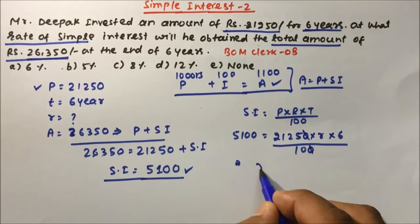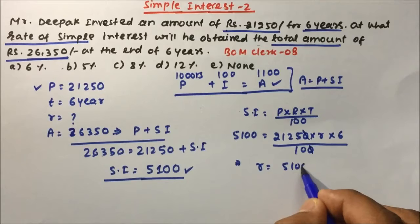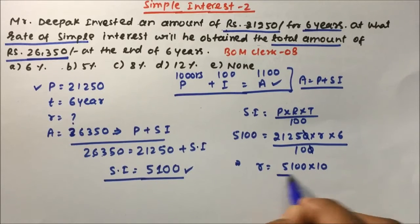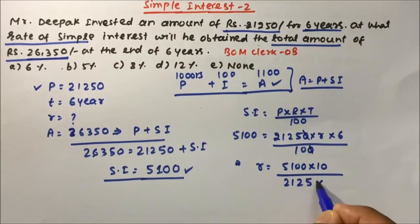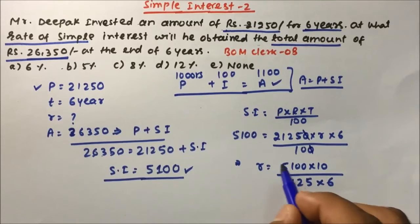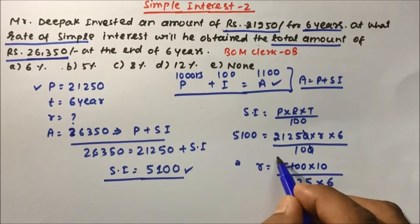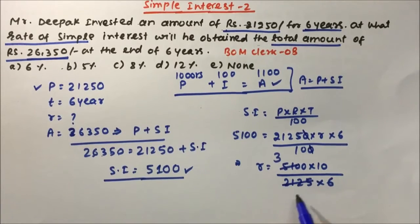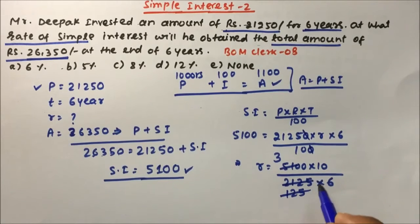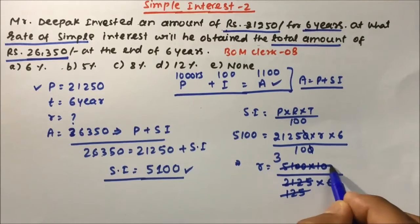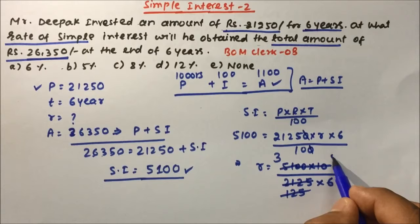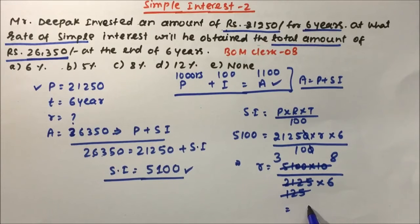After cross multiplication, rate = (5,100 × 10) / (2,125 × 6). Simplifying: 17 divides into the numerator 300 times and into 2,125 giving 125; 125 divides 1,000 by 8 times. This gives us 24 divided by 6, which is 4 percent.